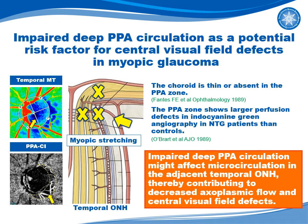We found a correlation between temporal MT measured by LSFG and PPA-CI measured by OCT angiography, and also central visual functions in glaucoma. The PPA-CI shows larger perfusion defect in indocyanine-green angiography in NTG patients than controls. Thus, impaired deep PPA circulation might affect microcirculation in the adjacent temporal optic nerve head, thereby contributing to decreased axoplasmic flow of retinal ganglion cells and central visual field defects.